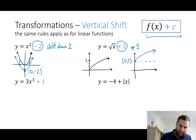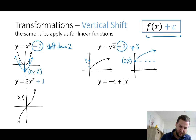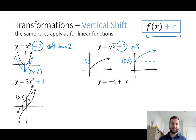For 3x cubed plus 1 — a cubic function has alternating arms. If you shift it up 1, the new origin point is (0, 1), and the new cubic function has been shifted up at every point.